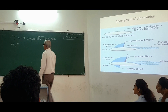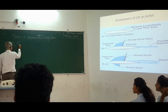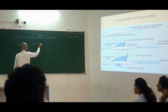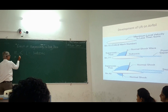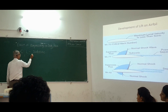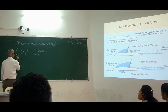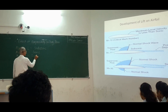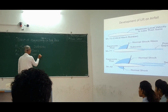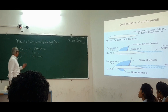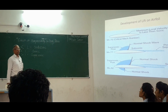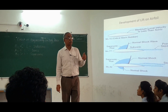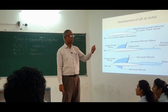If the Mach number is less than 1, we say it is subsonic flow. If it is equal to 1, we say it is sonic flow. And when it is greater than 1, it is supersonic flow. When the Mach number is greater than 1, the fluid is flowing with a velocity greater than the velocity of sound.